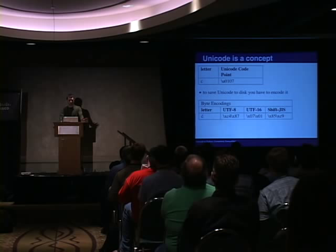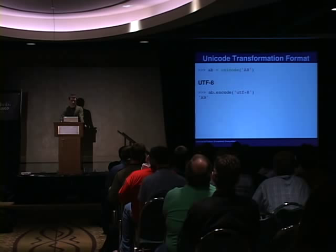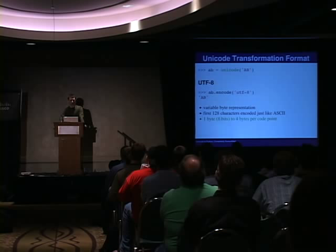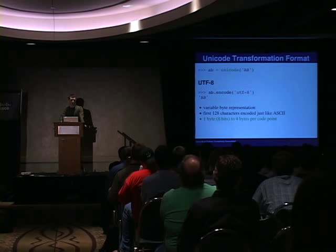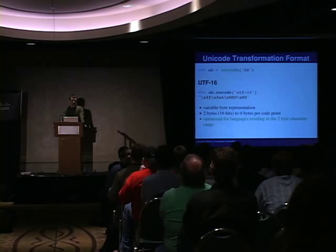UTF stands for Unicode Transformation Format. Starting with UTF-8, it's a variable byte representation, which means it uses either one byte to encode and can go up to two or four bytes, depending on the complexity of the character set. This also means it's backwards compatible with ASCII. So a Unicode object containing just capital letters A and B, when encoded to UTF-8, gives you A and B just as you'd normally expect in ASCII.